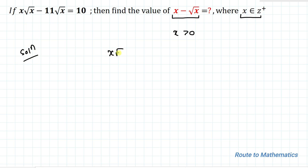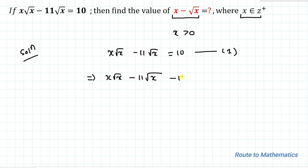We have given x√x minus 11√x equals 10. In the next step I will bring this 10 to the left hand side, so this implies x√x minus 11√x minus 10 equals 0. Now let √x equal t, which implies squaring both sides gives x equals t². I'll substitute t and t² into the equation.